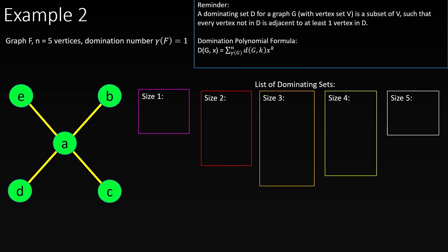As our next example, let's find the domination polynomial of graph F, which has five vertices and domination number one. We'll need the number of dominating sets of sizes one through five. There's only one dominating set of size one: A. So the coefficient on the degree-one term will be one. There are four dominating sets of size two: AB, AC, AD, and AE, so that coefficient will be four.